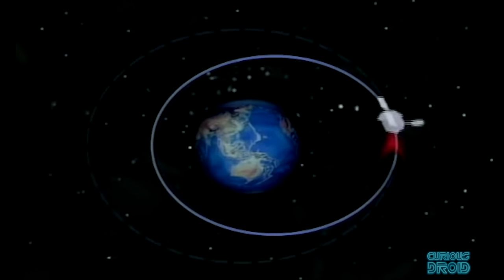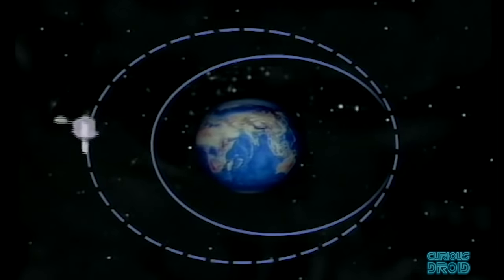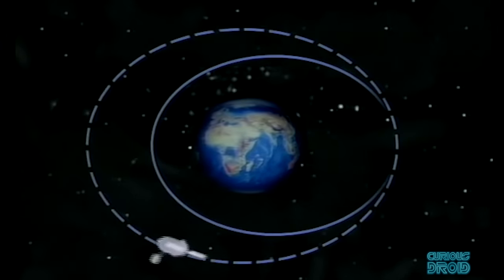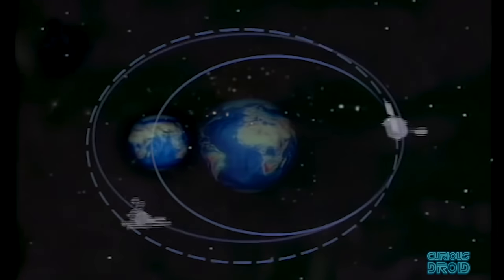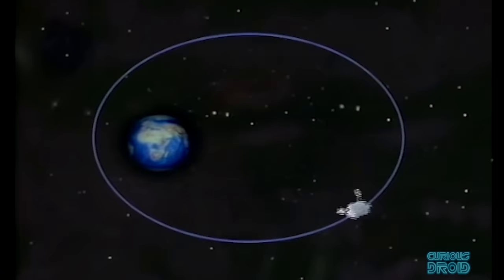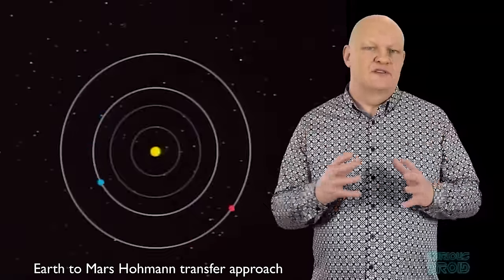If however a spacecraft increases its speed, the orbit will become larger and more elliptical, but it will always return to pass through the point where the speed was originally boosted. If the speed of our craft is increased enough, then it will escape the pull of Earth's gravity and enter an orbit around the Sun. Increase the speed more and it will increase the size of its orbit.